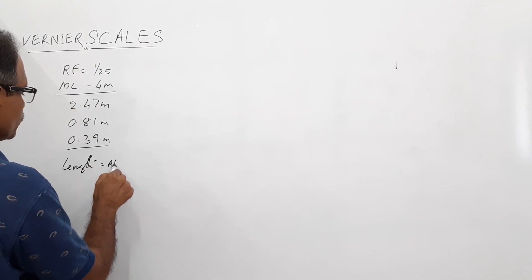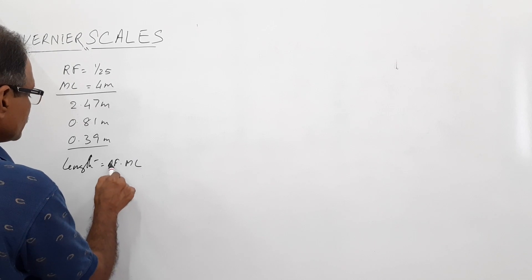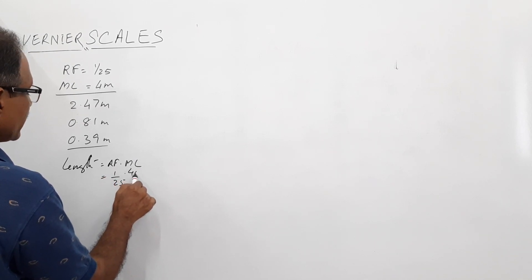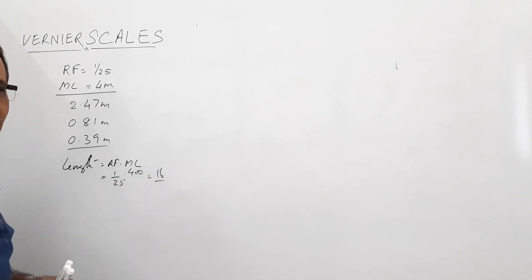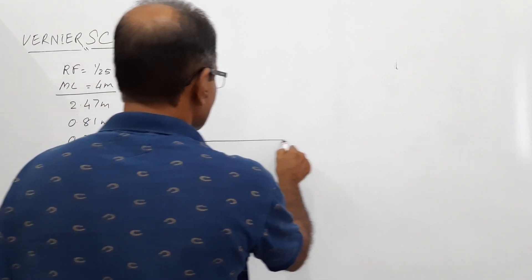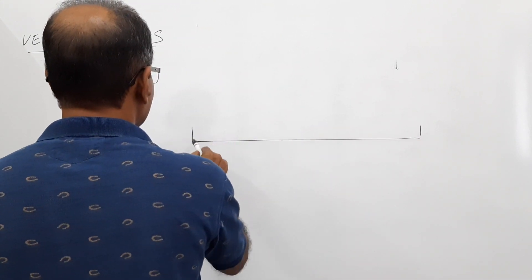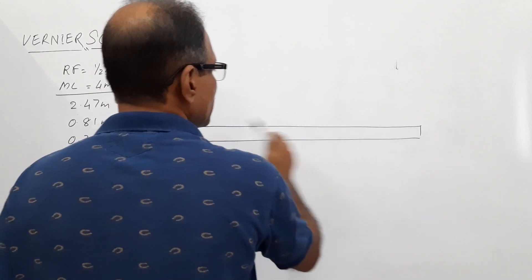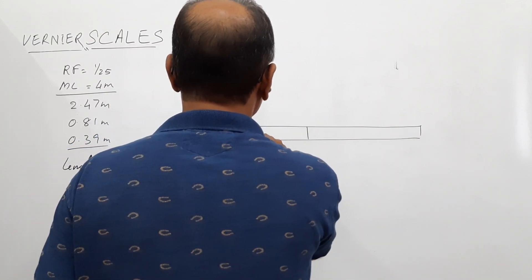RF into maximum length equals 1/25 into 400 equals 16 centimeters. I draw a small rectangle about one centimeter wide, just like in the case of a plane scale, 16 centimeters long, and divide this into four equal parts.